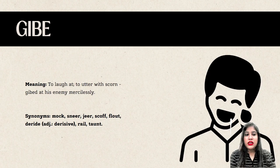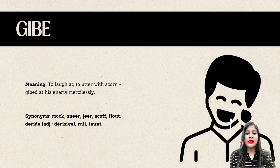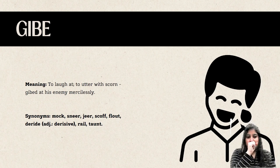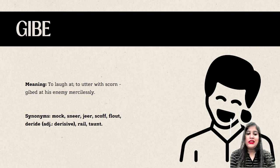Gibe means to laugh at someone, to mock or taunt — to utter with scorn. Example: 'Gibed at his enemy mercilessly.' Synonyms would be mock, sneer, jeer, scoff, flout, deride — adjective: derisive — and rail or taunt.